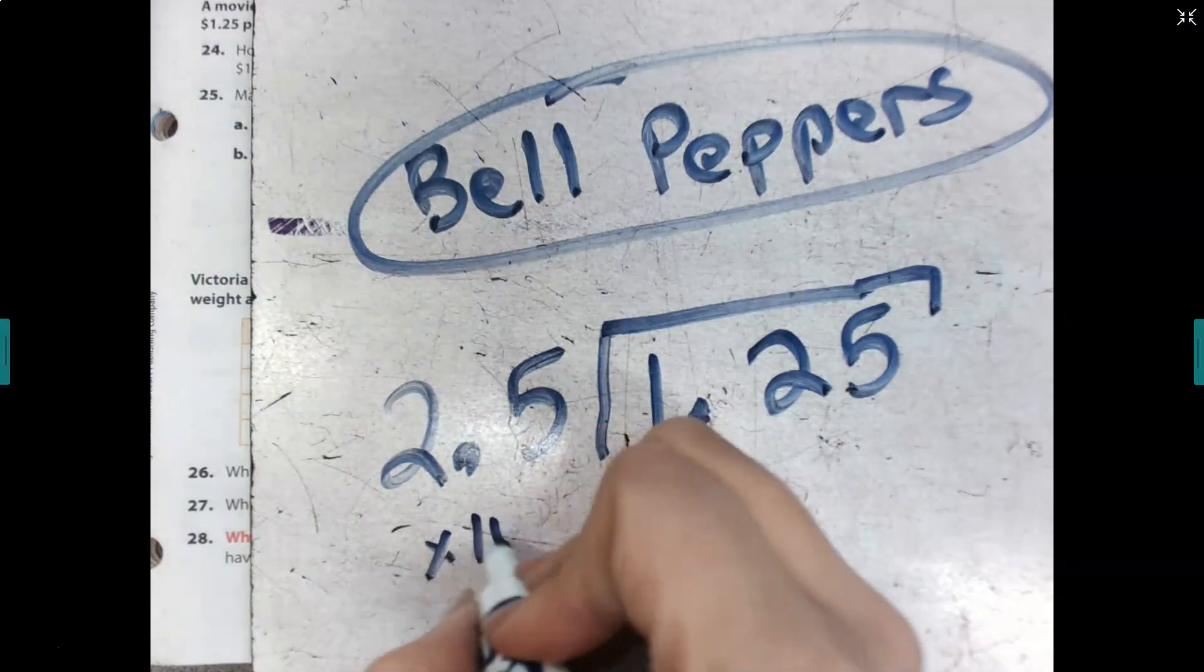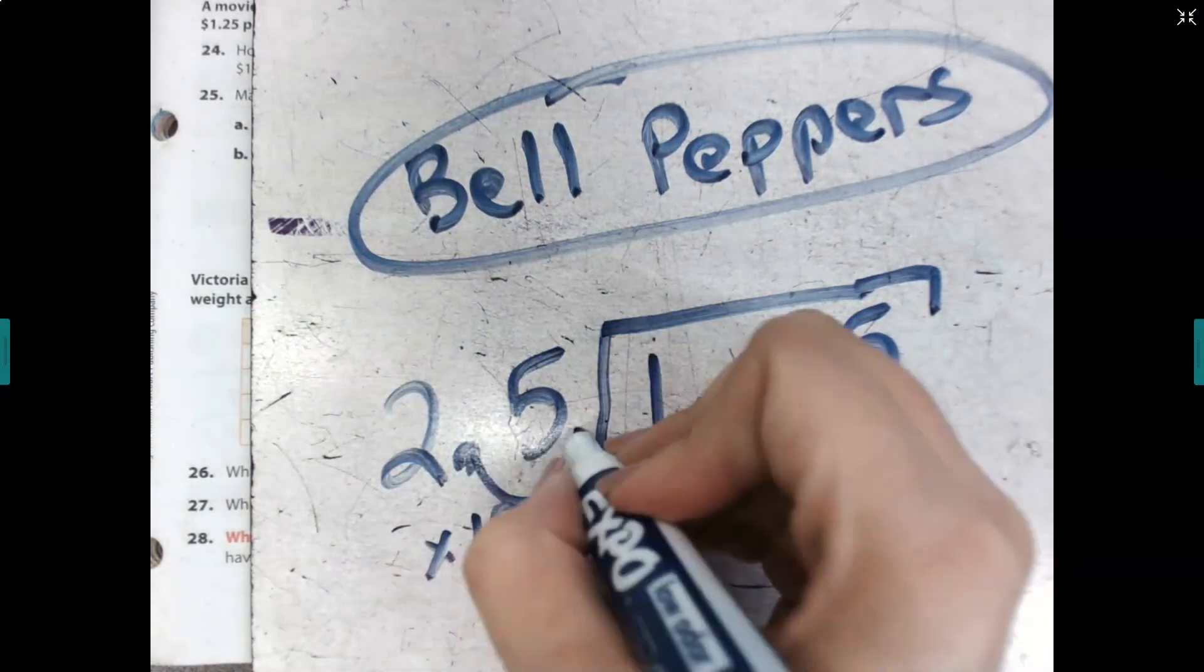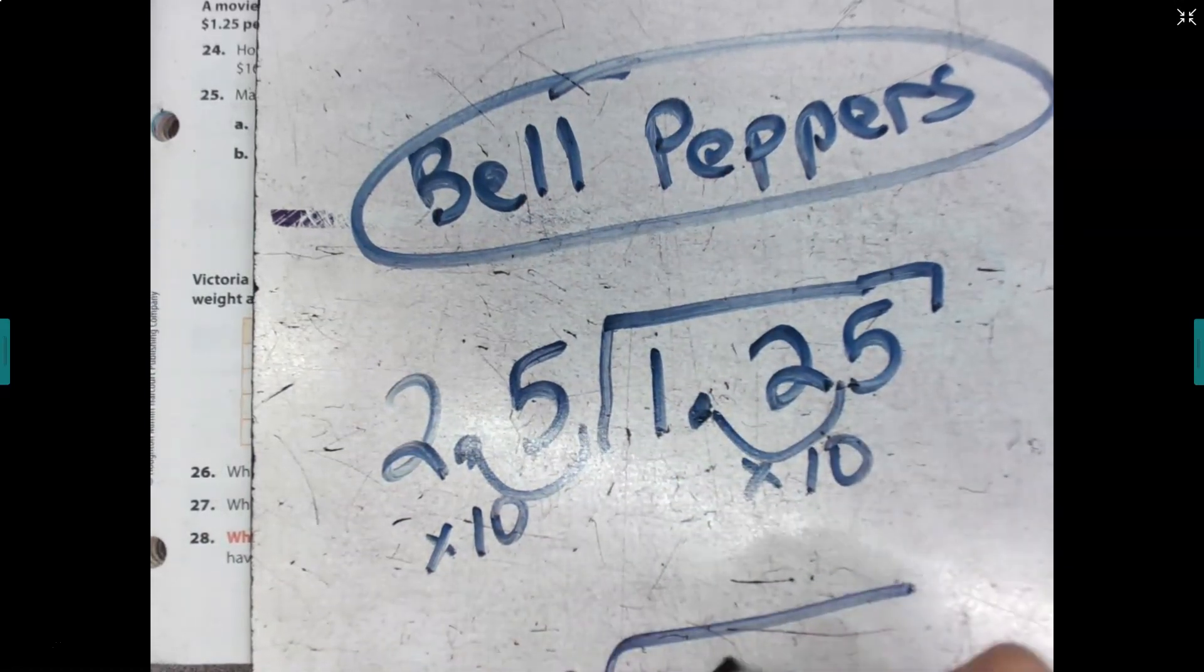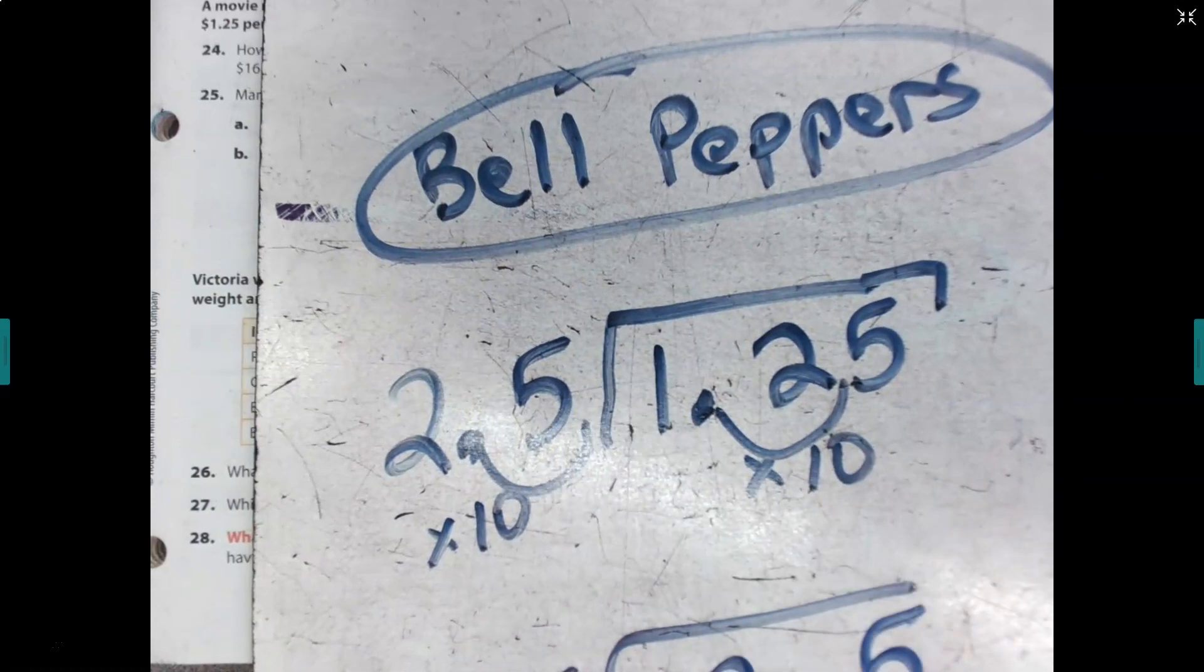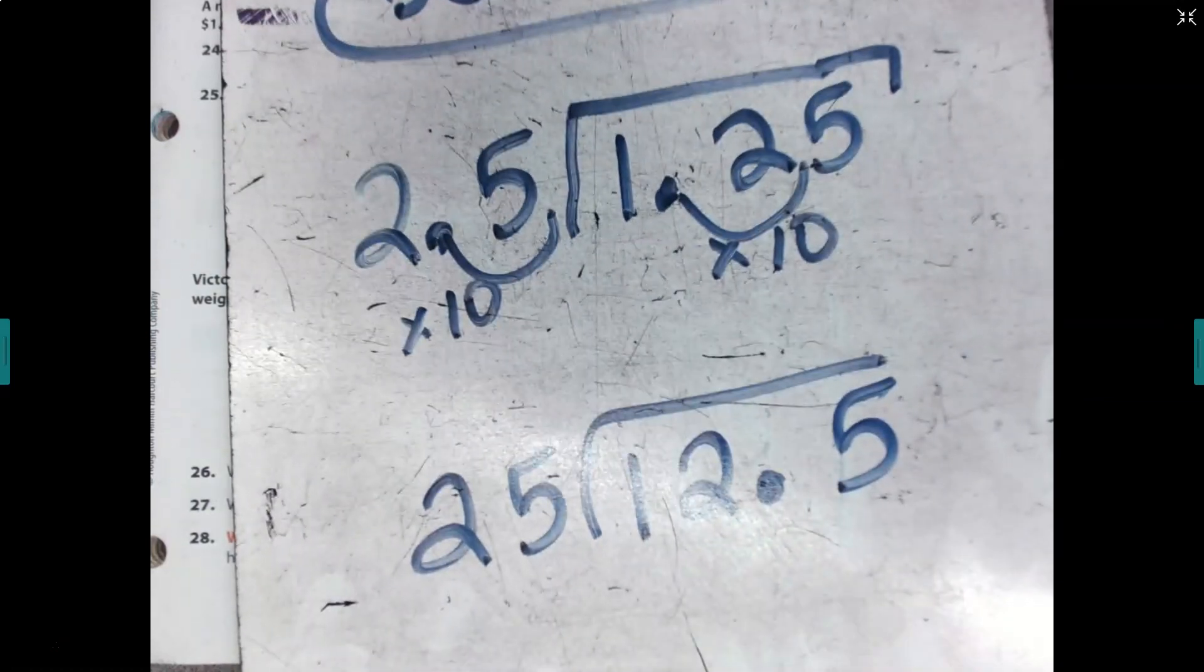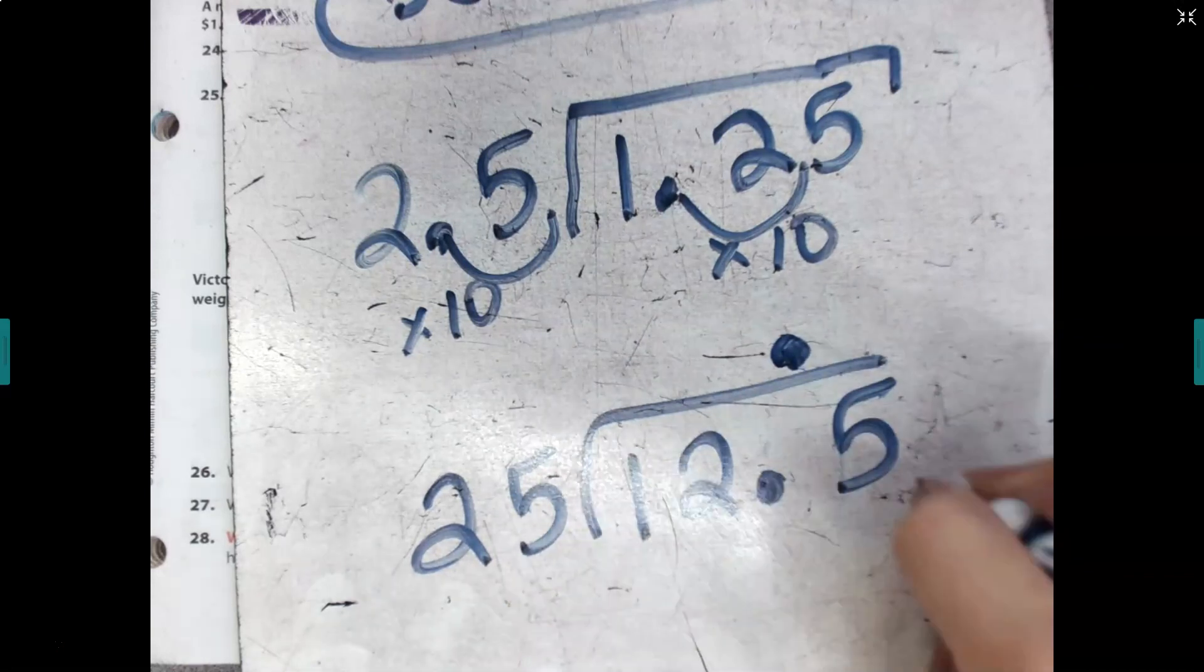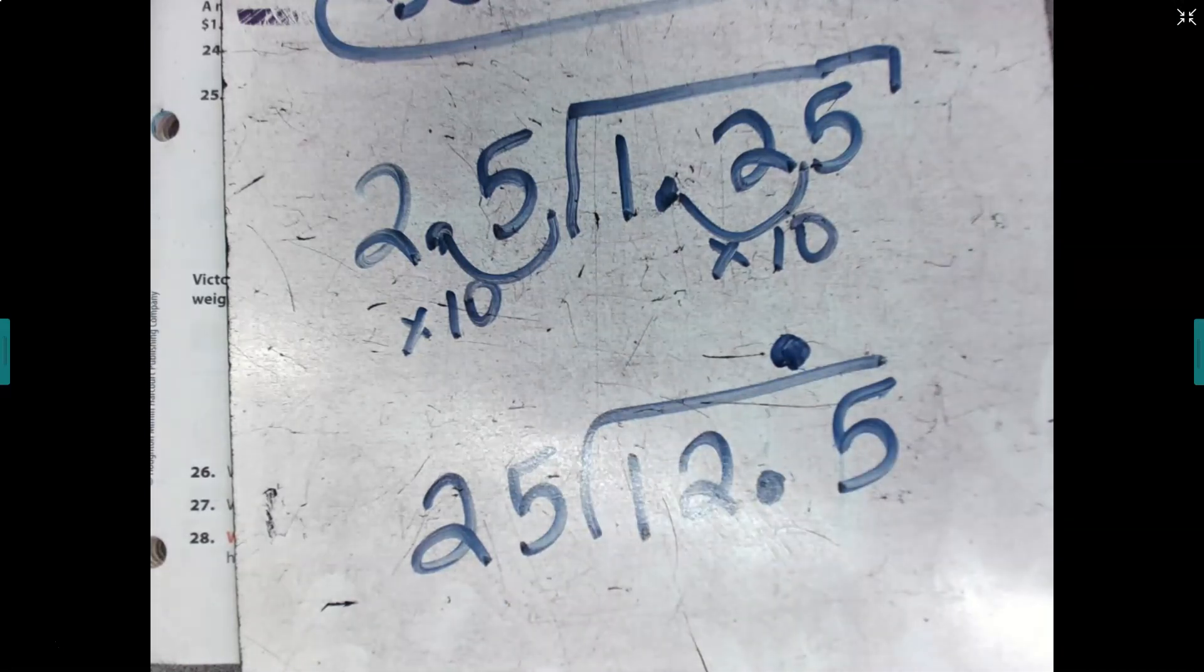So again, you can multiply both of these by 10, move your decimal point, and you can think about this. So then you're going to start by thinking, how many groups of 25 can I make here out of 12? I can't make any. Place your decimal point and then go from there.